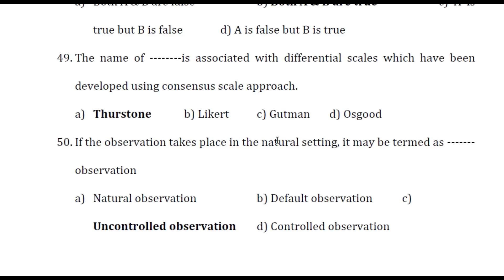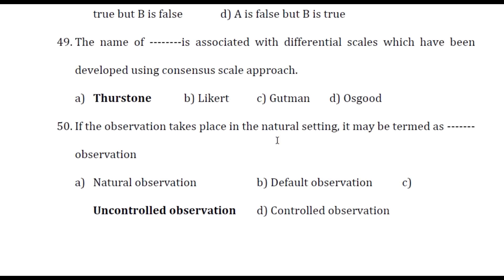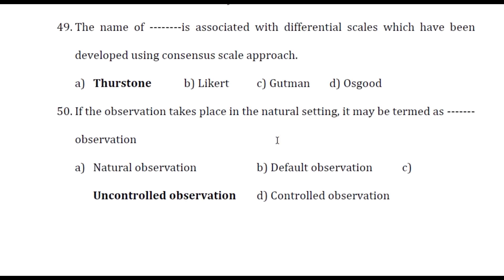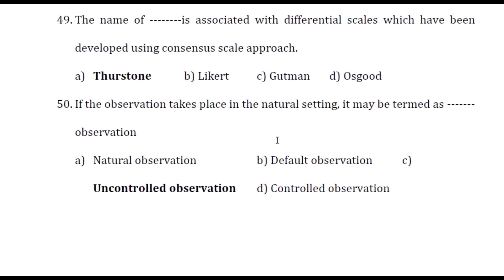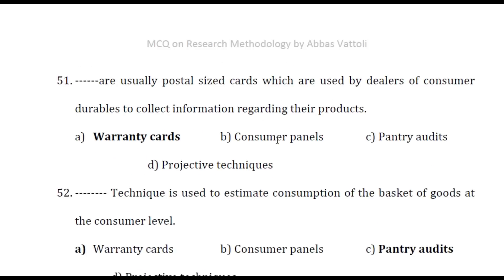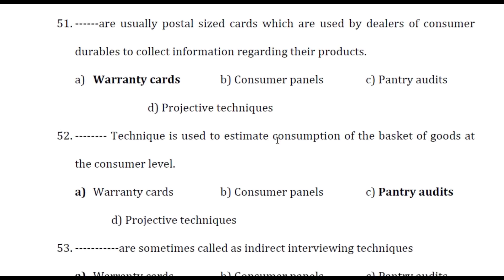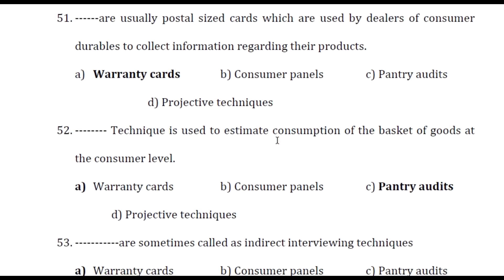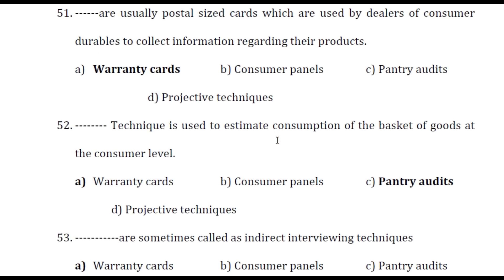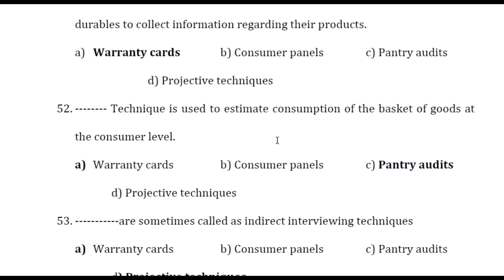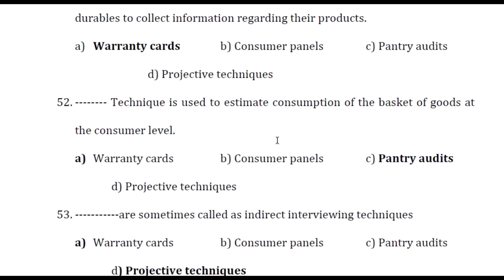If observation takes place in the natural setting, it may be termed as uncontrolled observation. Warranty cards are usually postal-sized cards which are used by dealers of consumer durables to collect information regarding their products.